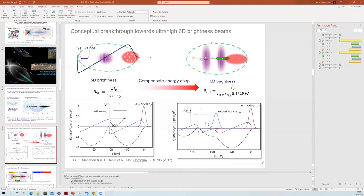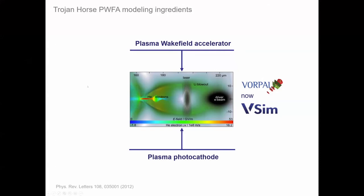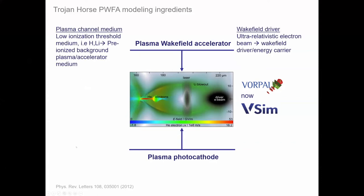Thank you Bernard for the very nice introduction. To focus on the key matter: for the plasma photocathode plasma wakefield accelerator, we essentially need the plasma channel medium — which can be low ionization threshold materials such as helium and lithium, easily pre-ionized. In a simulation you would introduce such a medium in VSim as macroparticles in the background with either a certain temperature, but typically if you pre-ionize with the laser you would assume them as cold. You also need the energy carrier: an ultra-relativistic electron beam as the actual energy carrier, transforming energy to the plasma electrons in the simulation box.